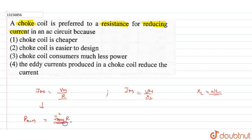This is IRMS squared R. The power which is dissipated as heat is wasted. But what about the actual inductor?